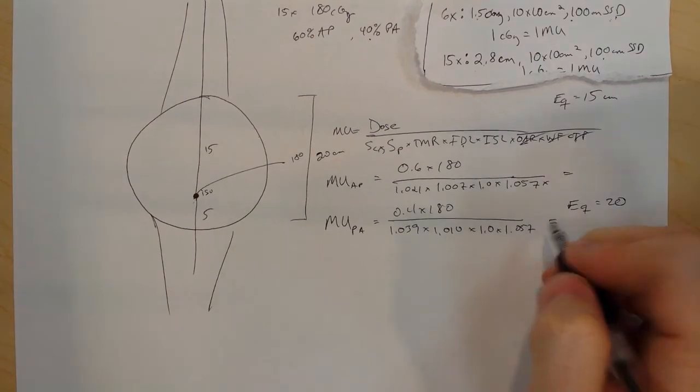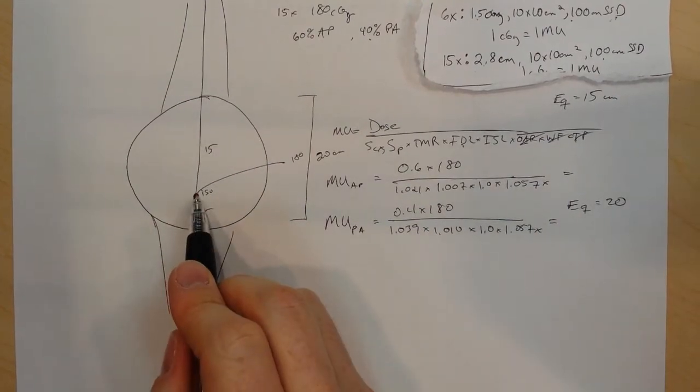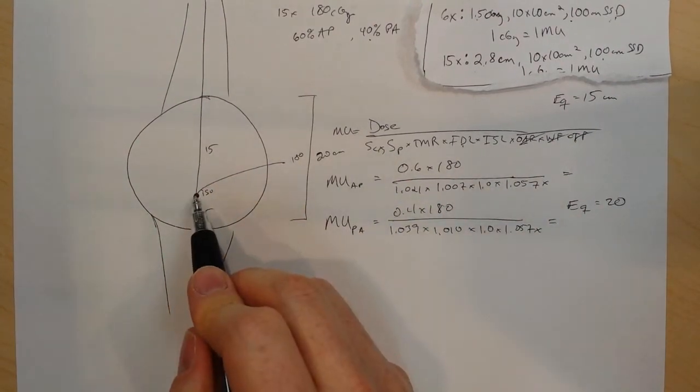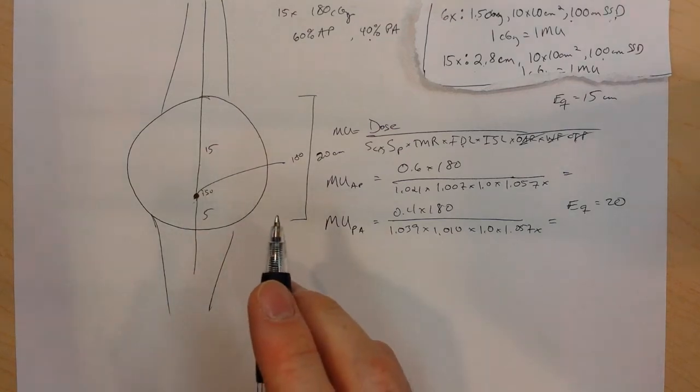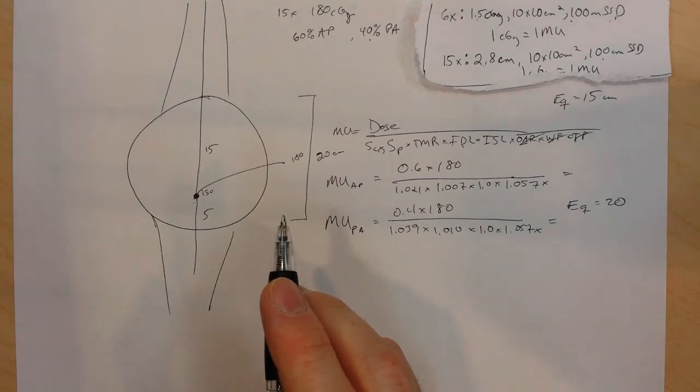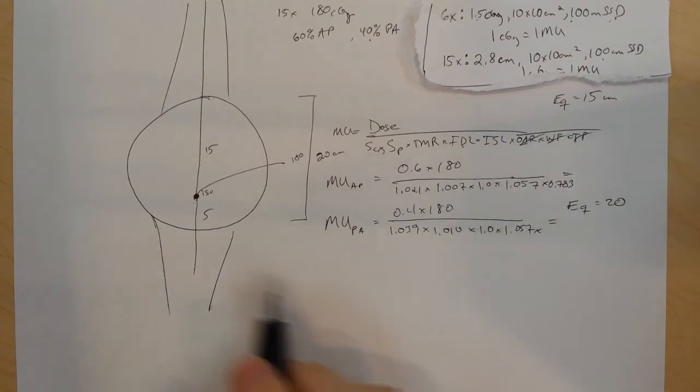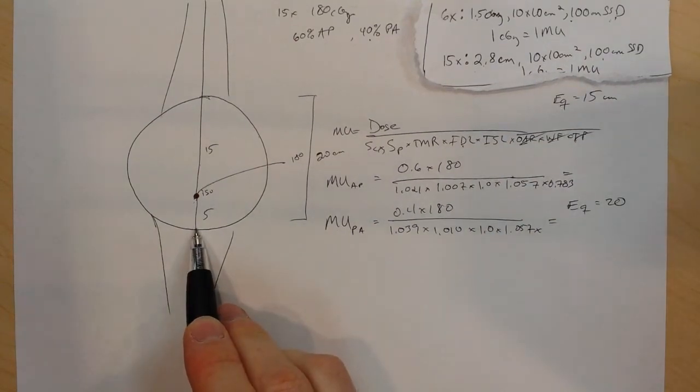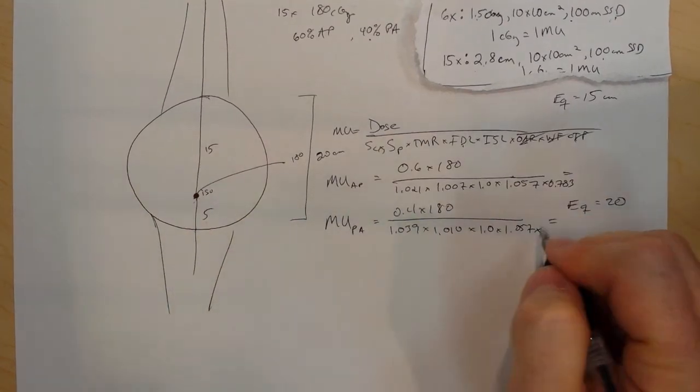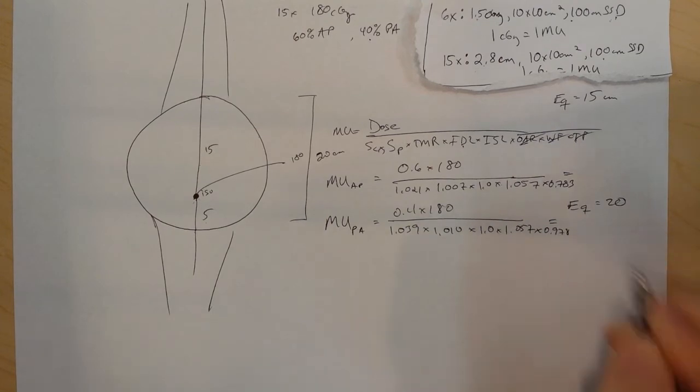Now, what's different? TMR. TMRs are going to be different here. So I'm at 15 centimeter deep from the AP. If I look in my tables at 15 centimeter depth for 15 by 15 field size, 15 MV, 0.783. My TMR had better be larger for this case because I'm not going to as deep of a depth. So let's look up 15 field size, 5 centimeter deep TMR: 0.978.